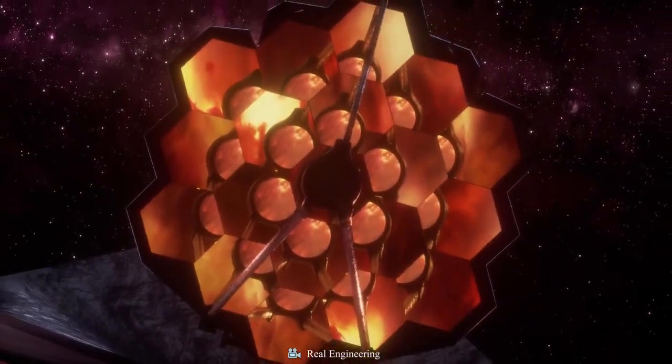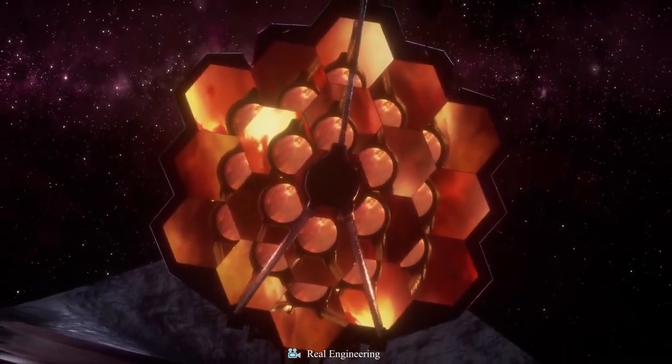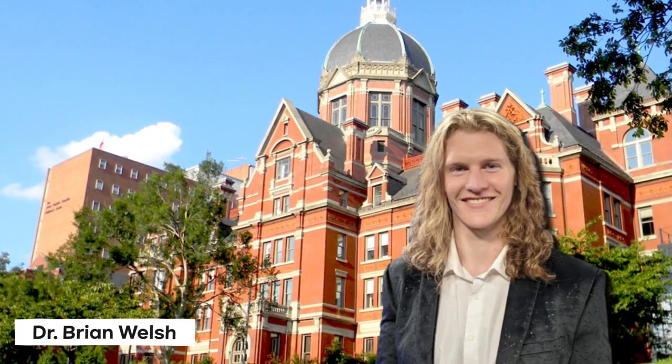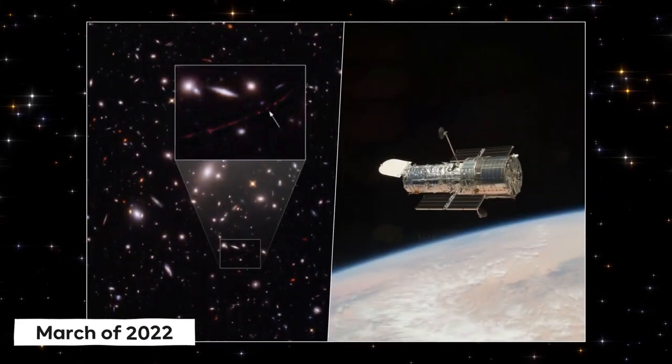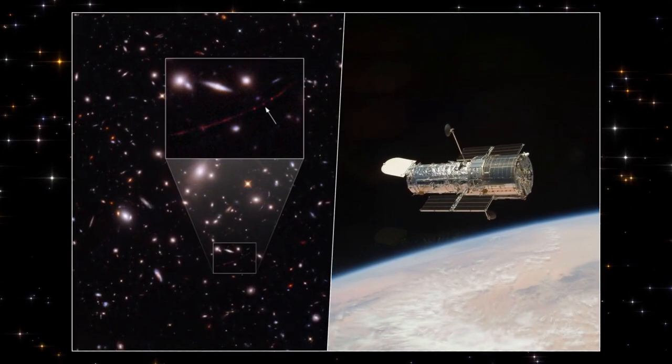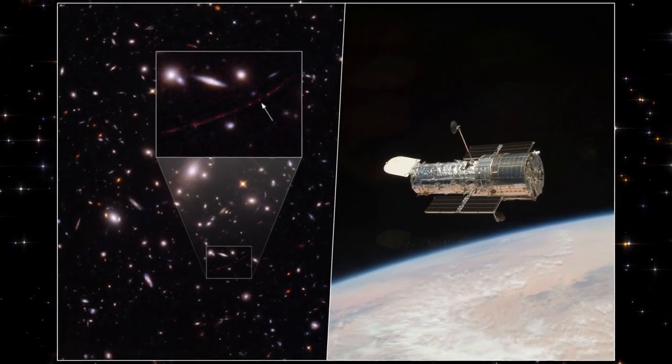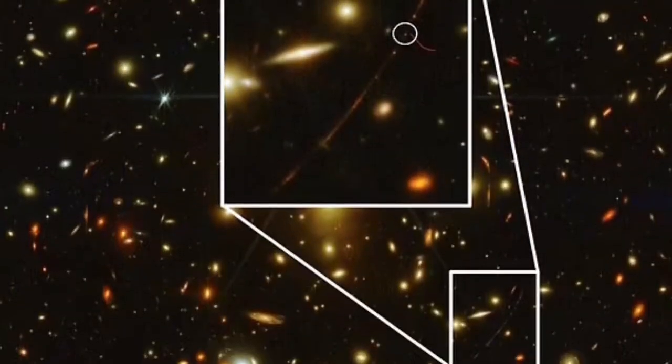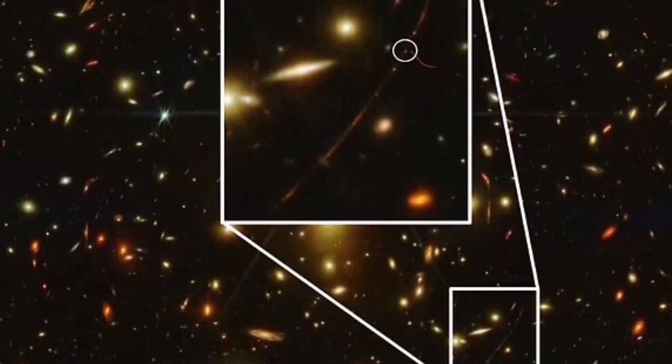Hubble could only provide a limited amount of information on this faraway star. Therefore, researchers decided to use the James Webb Space Telescope to investigate the parent's features. Dr. Brian Welsh of Johns Hopkins University served as the study's principal investigator. In March of 2022, he and his team discovered the star by utilizing data from the Hubble Space Telescope. Webb's NIRCam device collected new photographs of Earendel, and the researchers evaluated those images.